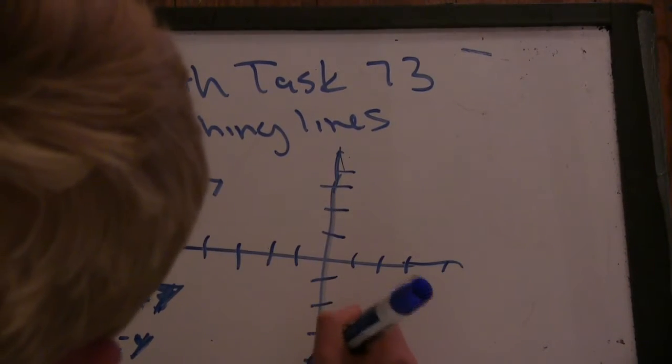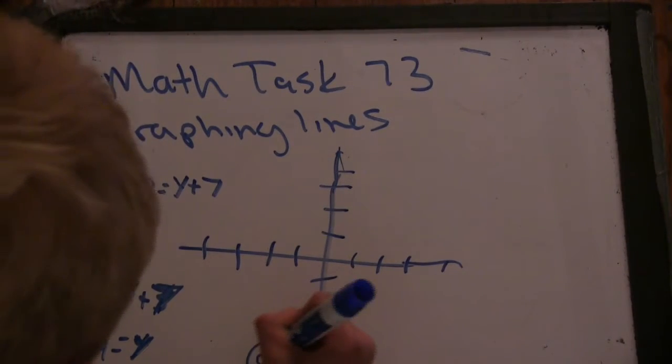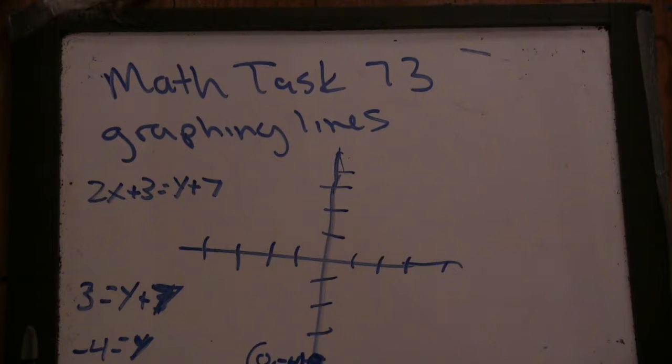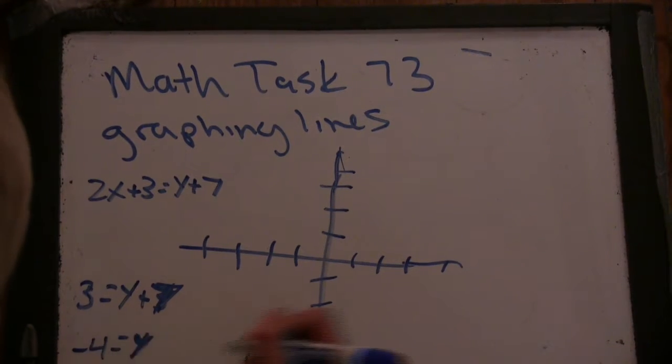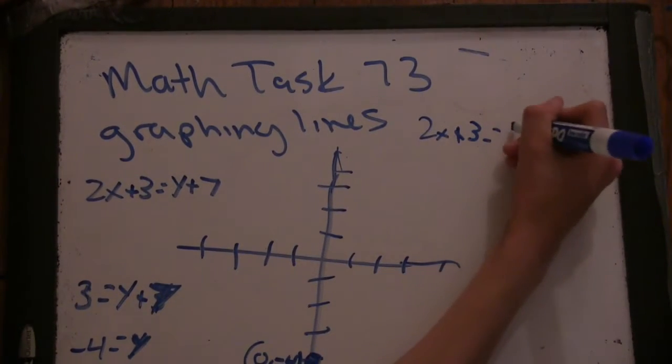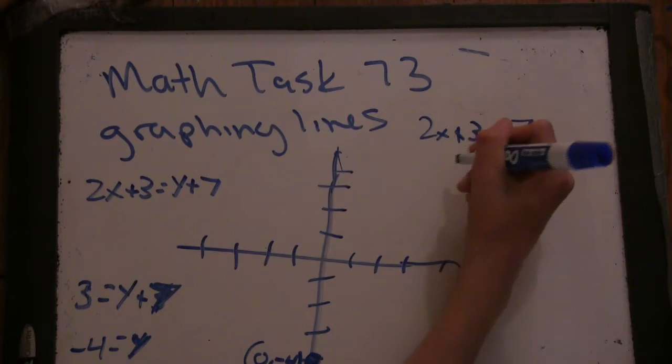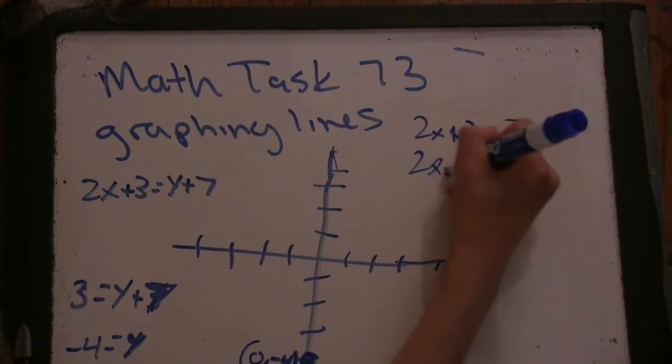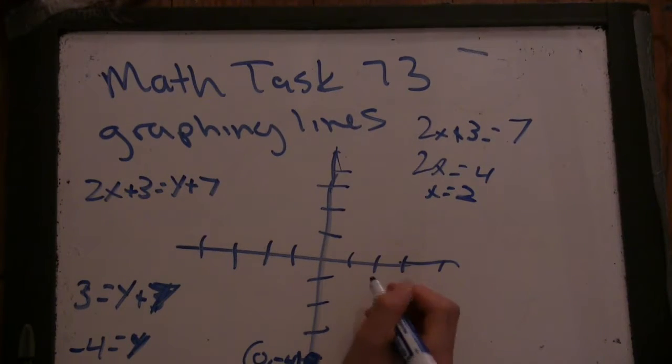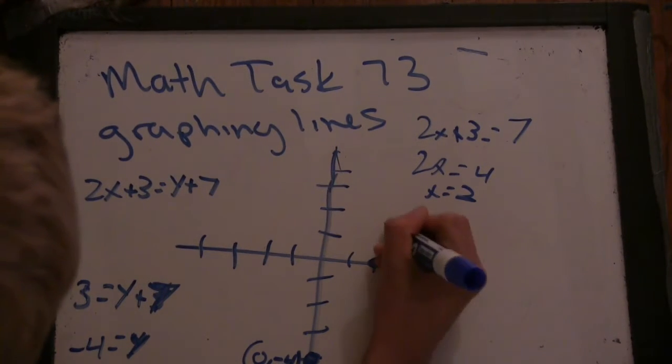So now we need to find another point. And we'll assume y is 0. Okay. I like that idea. So we have 2x plus 3 is 7. So we get 2x is 4, and x is 2. So we'll have the point 2, 0. Okay.